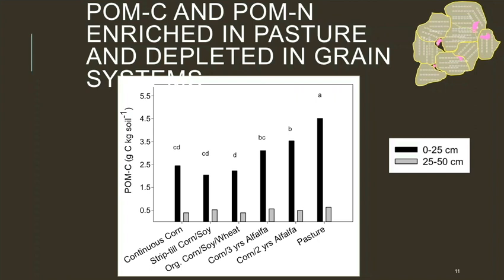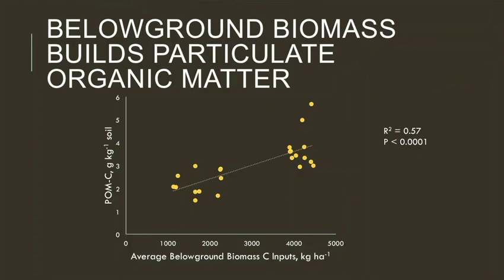We can also explain the difference by the below-ground biomass in a perennial system, which has more roots year-round that can contribute to POM. We looked at that relationship specifically between below-ground biomass carbon and POM. We averaged the below-ground biomass carbon inputs over 20 years of the trial, applying correction factors for root exudates and turnover. The grain systems on the left have much lower below-ground biomass carbon, and the forage systems on the right have much higher. We found a positive relationship with POM, confirming that below-ground biomass carbon contributes significantly to soil organic matter — more so than above-ground biomass.